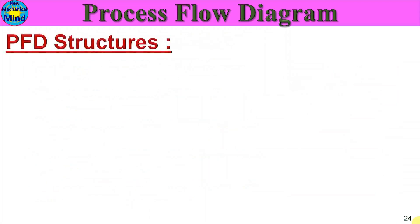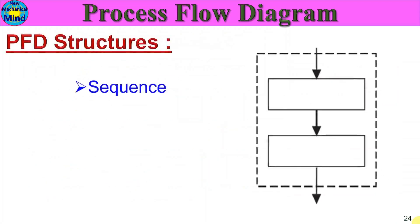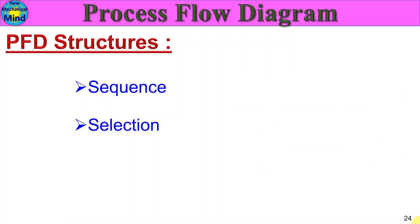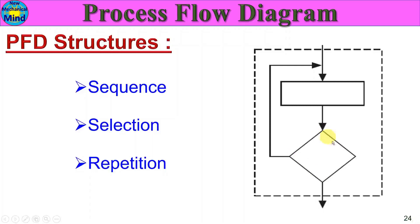PFD structures. The first structure is a sequence process - steps are done in a sequential order. The second is a decision-making box - this is a question with yes or no answers. The third is a continue and repeat process - this is the repetition structure.